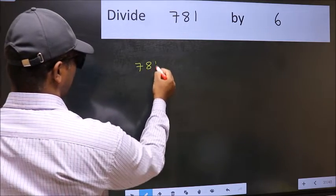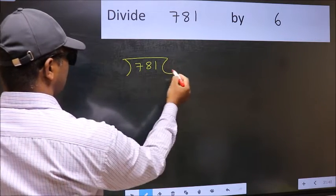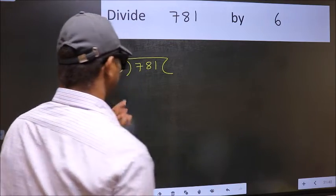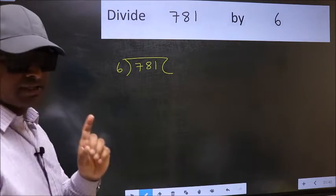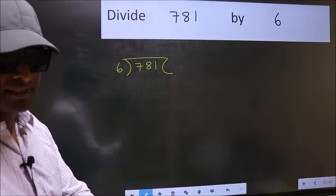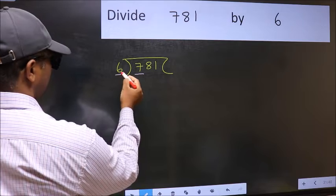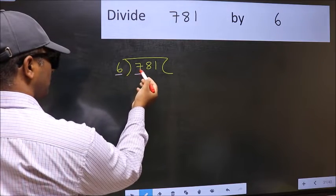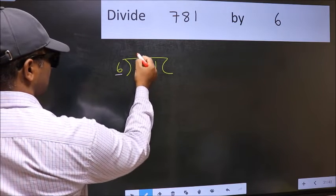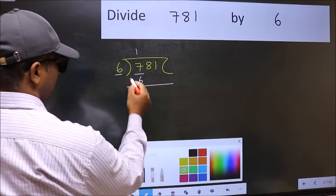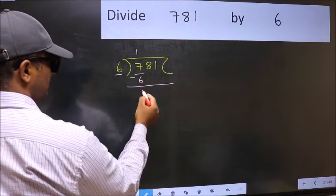781 and 6 here. This is your step one. Next, here we have 7 and here 6. A number close to 7 in the 6 table is 6 once, which is 6. Now you should subtract: 7 minus 6 equals 1.